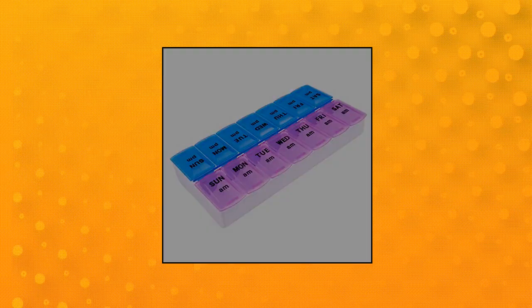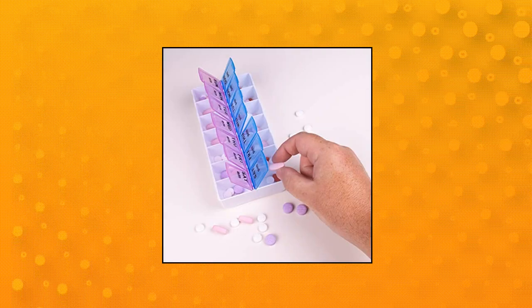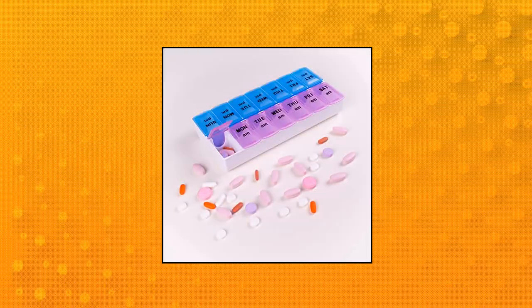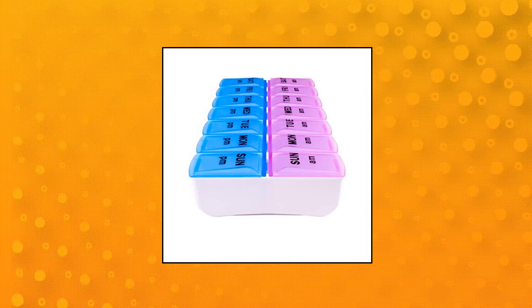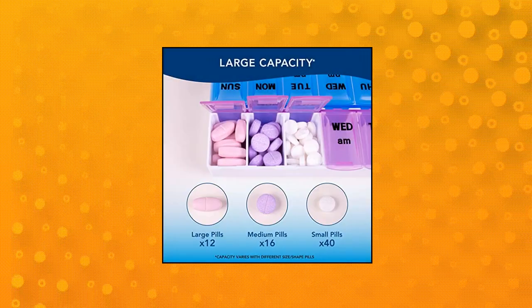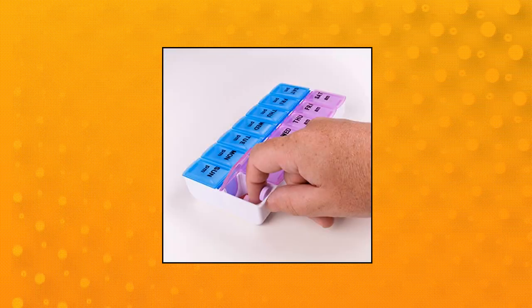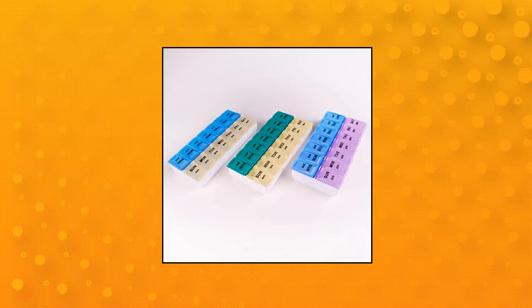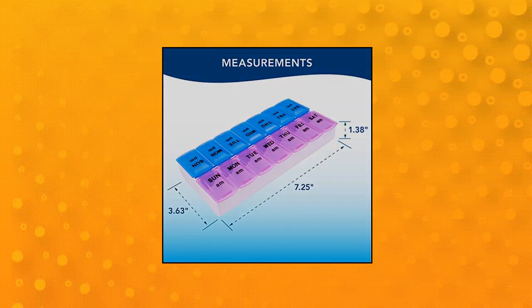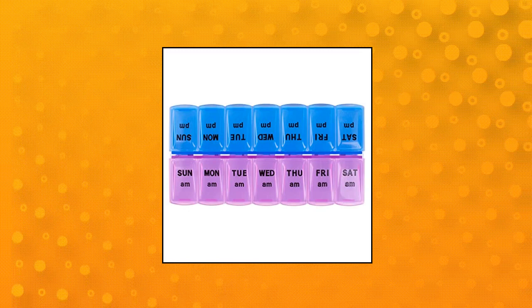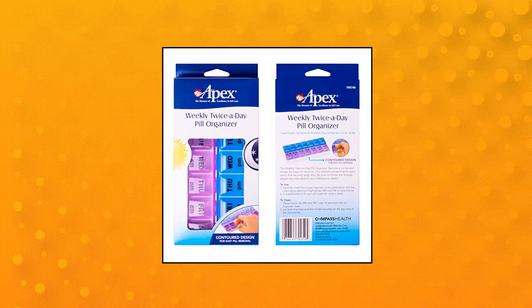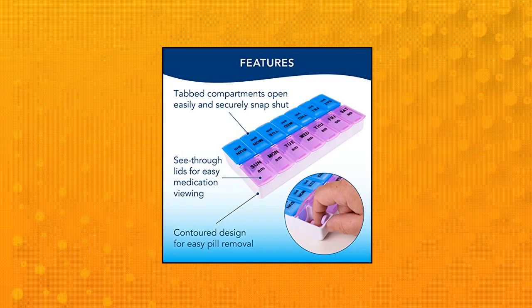Apex twice a day weekly pill organizer. Easily see whether you've taken your medication with this easy open, two times a day pill organizer for all 7 days of the week. This sturdy plastic pill box lets you organize vitamins or medication by time of day and day of the week. This 7 day pill box lets you organize medication for the morning.